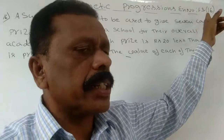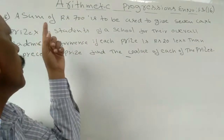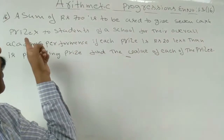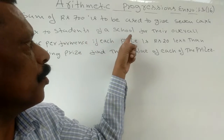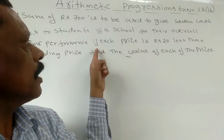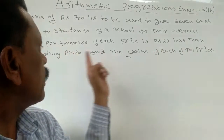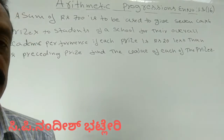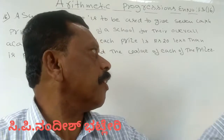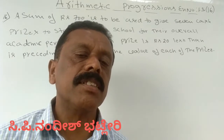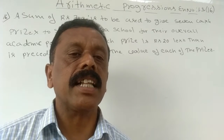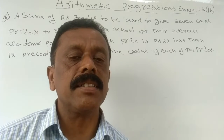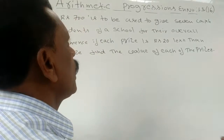In Arithmetic Progression Exercise 1.3, Question 60: A sum of rupees 700 is to be used to give seven cash prizes to students of a school for their overall academic performance. If each prize is rupees 20 less than the preceding prize, find the value of each prize. There are seven prizes, the total amount is 700, and the first prize is 20 rupees more than the second.